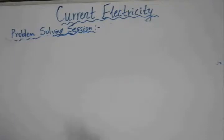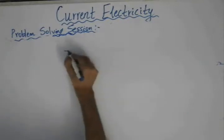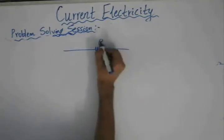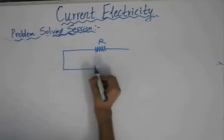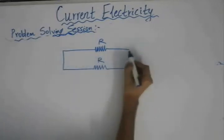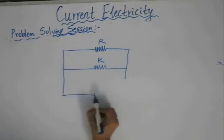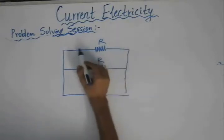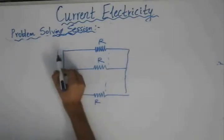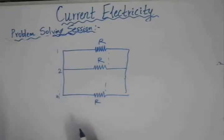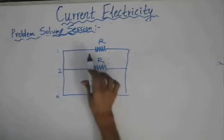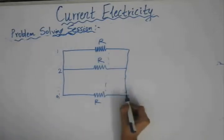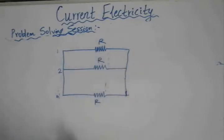Before we proceed to the next example, let me give you a shortcut for when n identical resistors are connected in parallel. We have n identical resistors connected in parallel, where this is the first branch, and this is the nth branch. We need to determine the equivalent resistance for this case when all the resistors are identical.